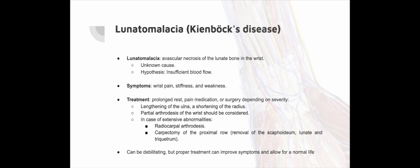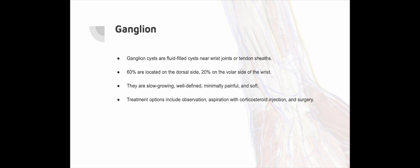Lunatomalacia / Kienböck's disease: Lunatomalacia, an avascular necrosis of the lunate, is a condition with unclear etiology. Often associated with microtrauma, it is more prevalent in individuals with heavy, vibration-intensive occupations such as pneumatic drill operators, and those with a relatively short ulna compared to the radius. Symptoms typically manifest as pain localized around the lunate and ulna, accompanied by functional limitations of the wrist. Extension of the middle finger can be particularly painful. As the avascular lunate collapses progressively, osteoarthritis of the entire wrist joint may develop. Diagnosis relies on X-ray, which may reveal bone densification, sclerosis, or collapse. MRI scans are particularly useful in the early stage. Treatment options include prolonged rest, ulnar lengthening, radial shortening, or partial wrist arthrodesis. In case of extensive abnormalities, radiocarpal arthrodesis or carpectomy of the proximal row may be recommended.